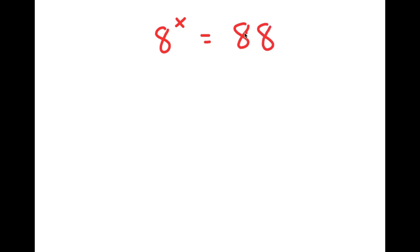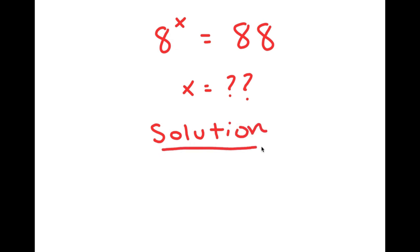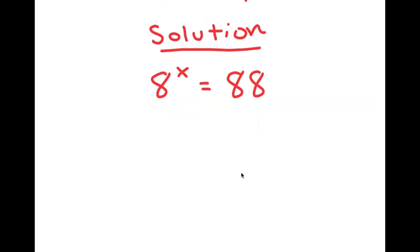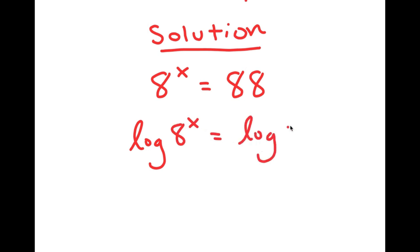In this video, I'm going to be solving the equation 8 to the power of x is equal to 88. My only variable is x, so that's what I'm solving for. My equation is 8 to the power of x is equal to 88. I'm going to first start by taking the log on both sides, so I get log of 8 to the power of x is equal to log of 88.